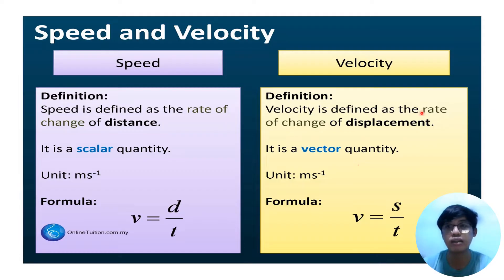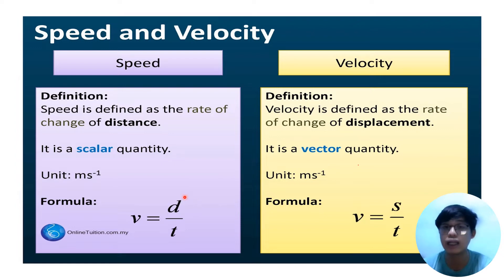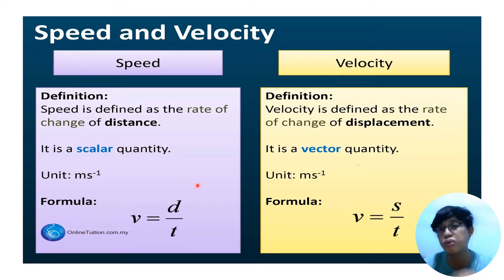When it comes to scalar and vector quantity: speed is considered a scalar quantity while velocity is considered a vector quantity. The difference between scalar and vector is that scalar refers only to magnitude, while vector refers to magnitude with direction. Directions include north, south, west, and east.